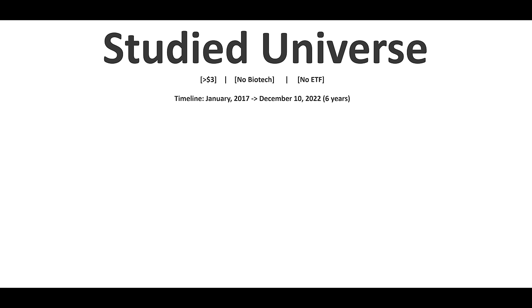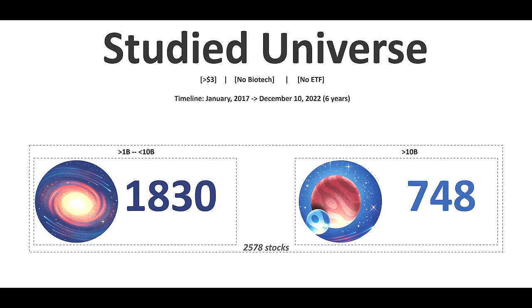For the studied universe, I selected stocks above three dollars, with no biotech stocks and no ETFs included. The historical data covered January 2017 until December 10th, 2022 — six years of data. The tool I used was TC2000, which stores six years of historical data per stock. I ended up with 2,578 stocks split into two groups: 1,830 stocks between 1 billion and 10 billion market cap, and 748 stocks above 10 billion.